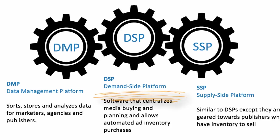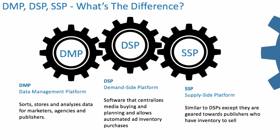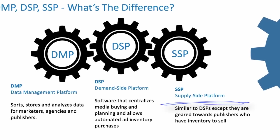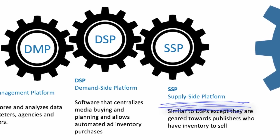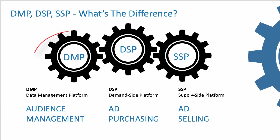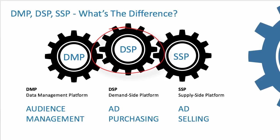A DSP, which stands for demand-side platform, is software that centralizes media buying and planning, and it allows automated ad inventory purchases. An SSP is similar to a DSP, but it focuses mainly on publishers. So think of it this way: DMPs handle audience management, DSPs handle ad purchasing, and SSPs handle ad selling.